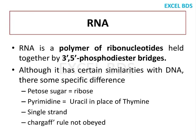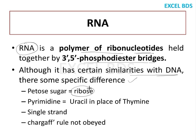First, what is RNA? RNA is a polymer of ribonucleotides held by phosphodiester bridges. The full form of RNA is ribonucleic acid. Although it has certain similarities with DNA, it has specific differences. The sugar molecule present in RNA is ribose, whereas in DNA we have deoxyribose.